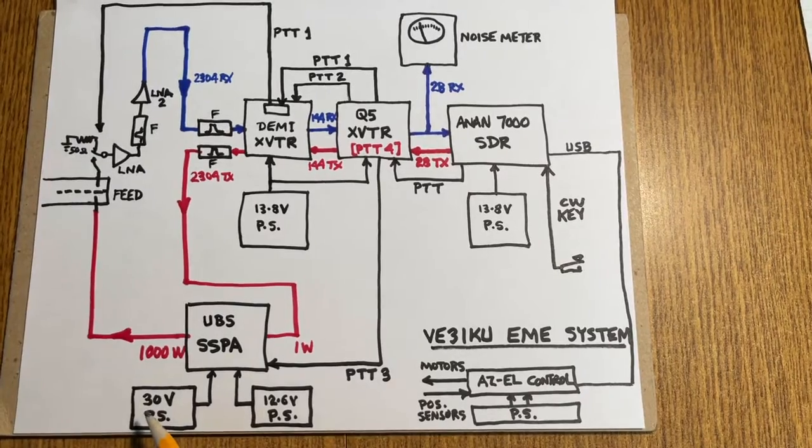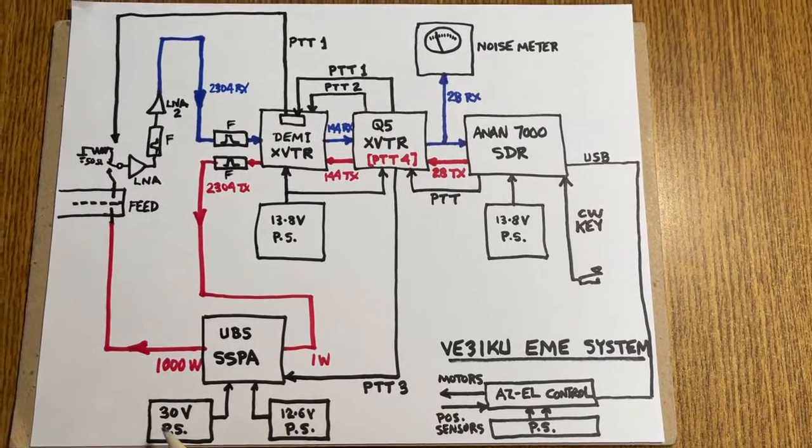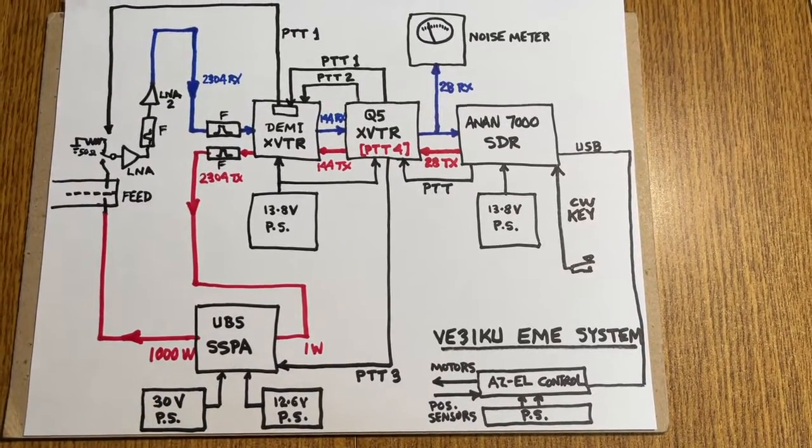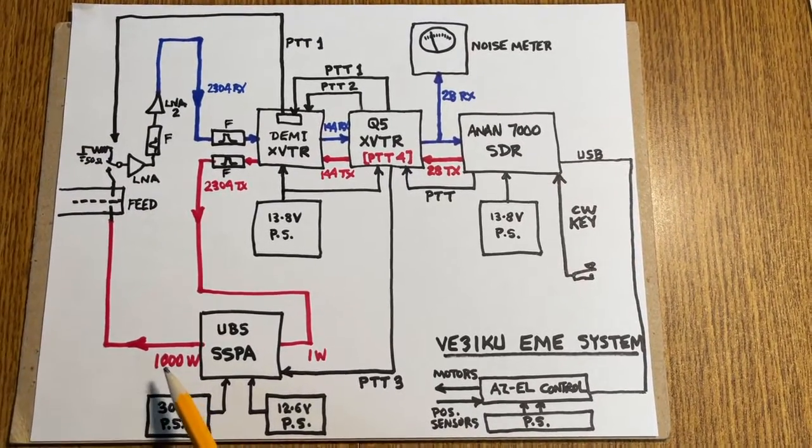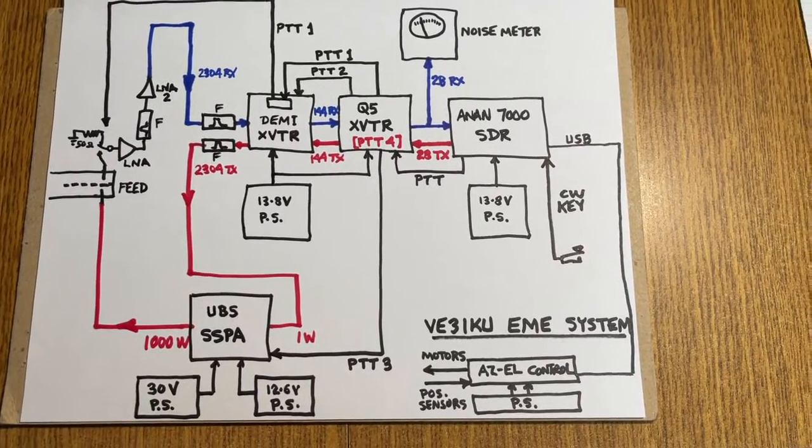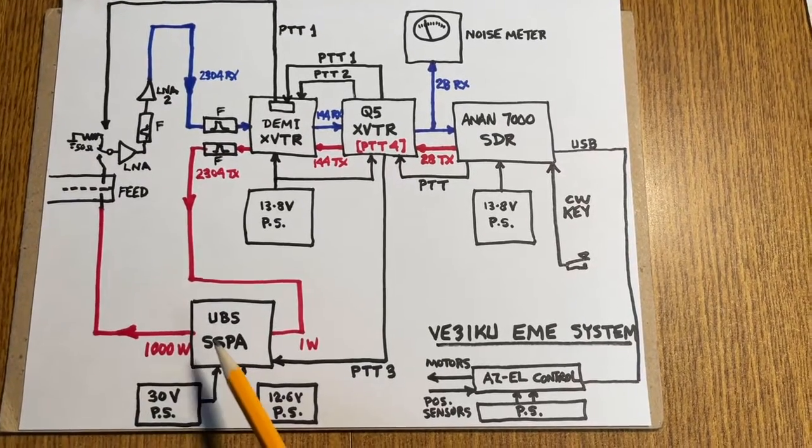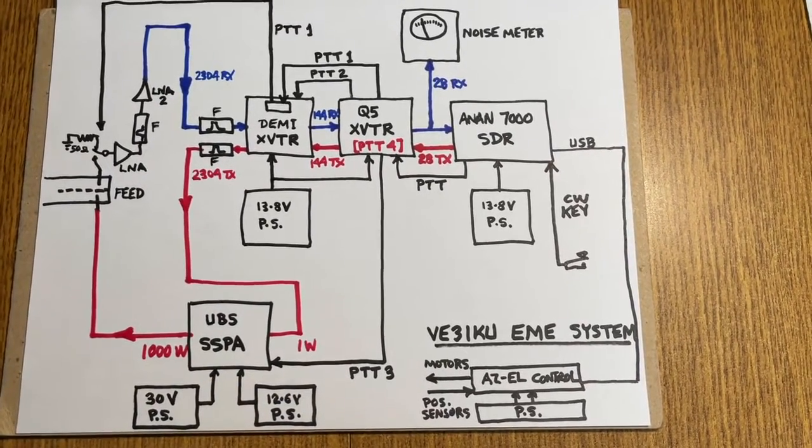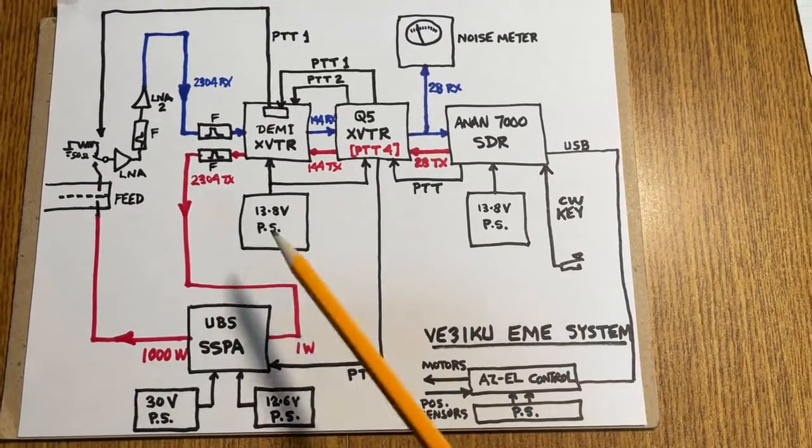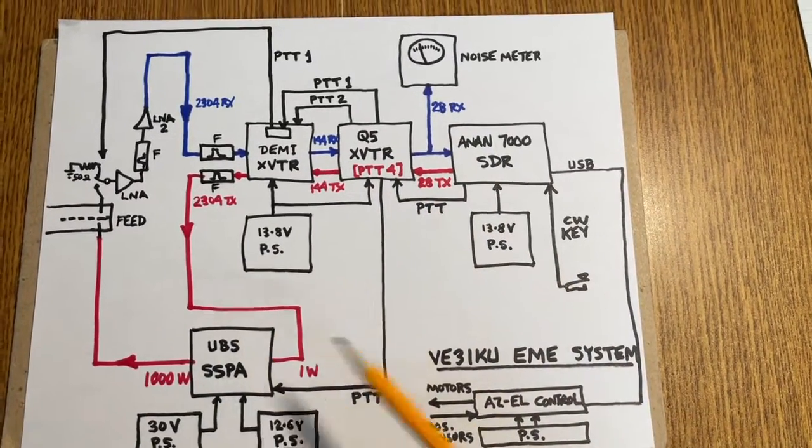30 volts at 80 amps is 2.4 kilowatts, and that's required to produce 930 to 1000 watts in saturation beyond the 1 dB compression point. In the linear range, the efficiency will drop even further. It's a high-efficiency Doherty system. So these are the power supplies that are required to operate the station, and these are the RF blocks and the controller.